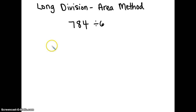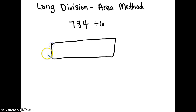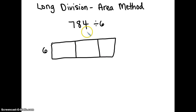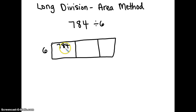Draw the area model for seven hundred eighty four divided by six. You put six on the left side, then you slice it three times for the hundreds, tens, and ones. Now you put seven hundred eighty four on top in the hundreds place.